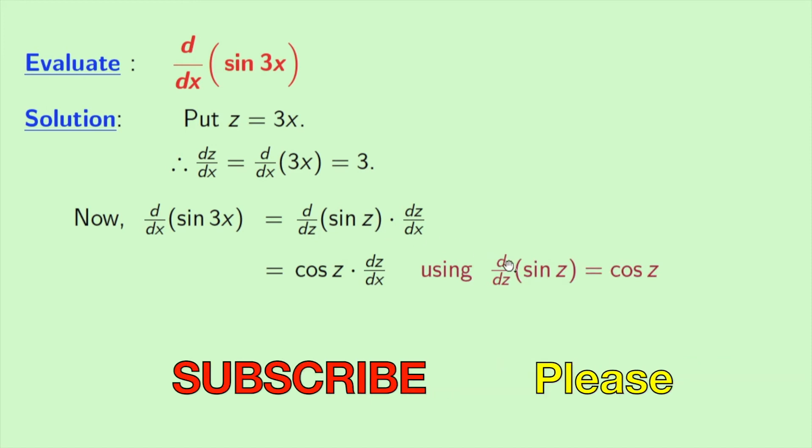And we know that derivative of sin z is cos z. So we get cos z times dz dx. And look that we have found dz dx equal to 3.